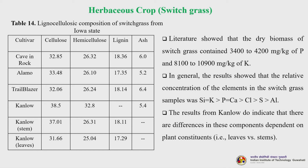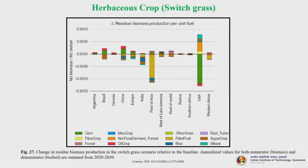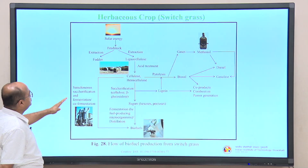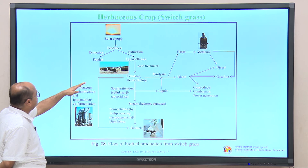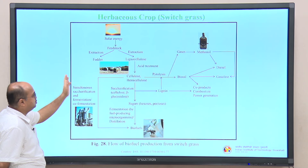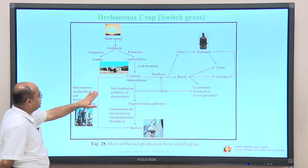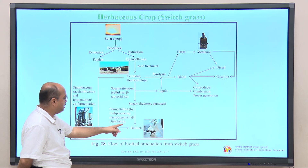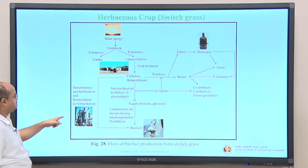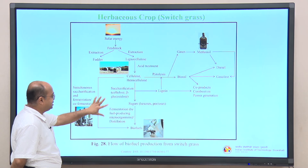Results showed that the relative concentration of elements in switchgrass samples follows the order: silicon and potassium > phosphate and calcium > chlorine > sulfur and aluminum. The biofuel production flow from switchgrass starts with solar energy growing the feedstock, then separation of fodder and lignocellulosic parts. After acid treatment, cellulose and hemicellulose are saccharified to hexose and pentose sugars, then fermented to get biofuels — or simultaneous saccharification and co-fermentation is possible. The lignocellulosic portion including lignin can also be pyrolyzed to produce bio-oil, from which diesel and other co-products are made. The aqueous phase of bio-oil also contains useful platform chemicals and value-added products — nothing is waste.